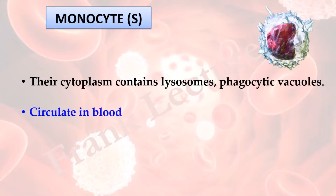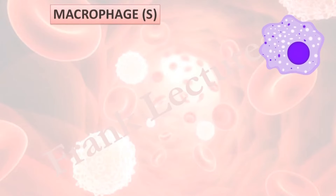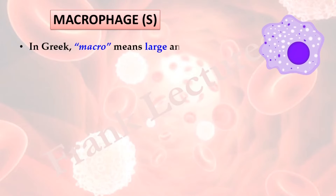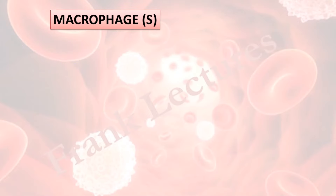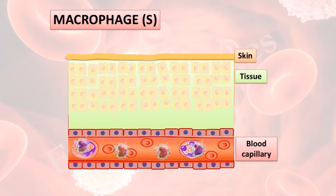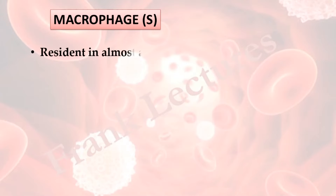Monocytes circulate in blood and migrate into tissues where they differentiate into macrophages. In Greek, 'macro' means large and 'phagein' means to eat. They are large white blood cells which engulf microbes. Macrophages are derived from monocytes — when monocytes circulating in the bloodstream migrate into the tissues, they develop and differentiate into macrophages, which become resident cells in the tissues.